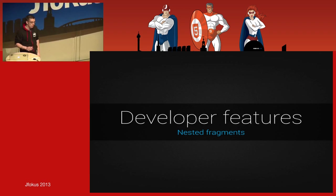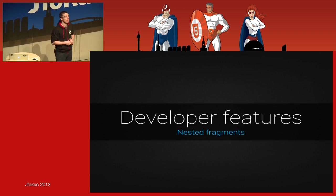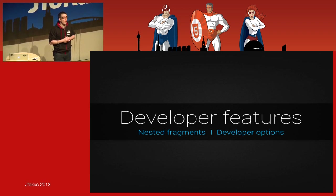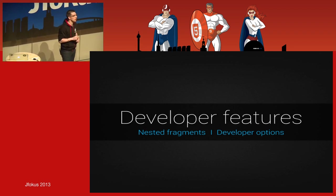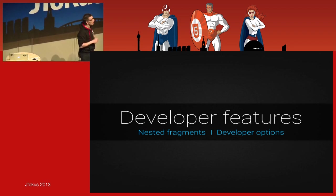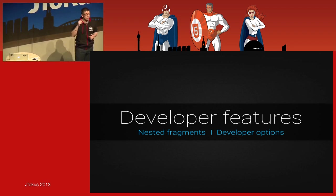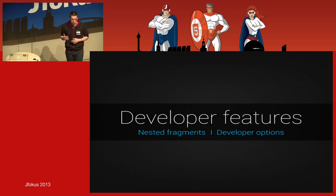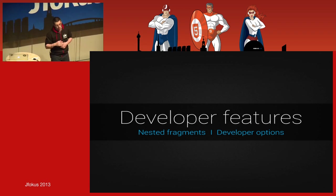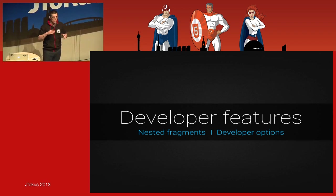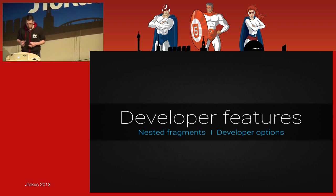Some new developer options have also been introduced in Jelly Bean. To enable them, you have to tap seven times on the build number in the Settings application. Once enabled, you can turn on options such as show overdraw, show layout bounds, show everything that has changed on screen, and more.